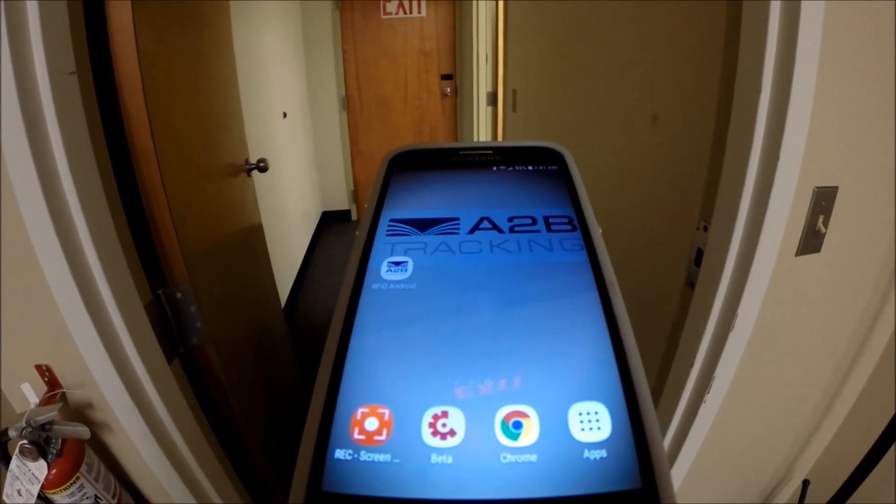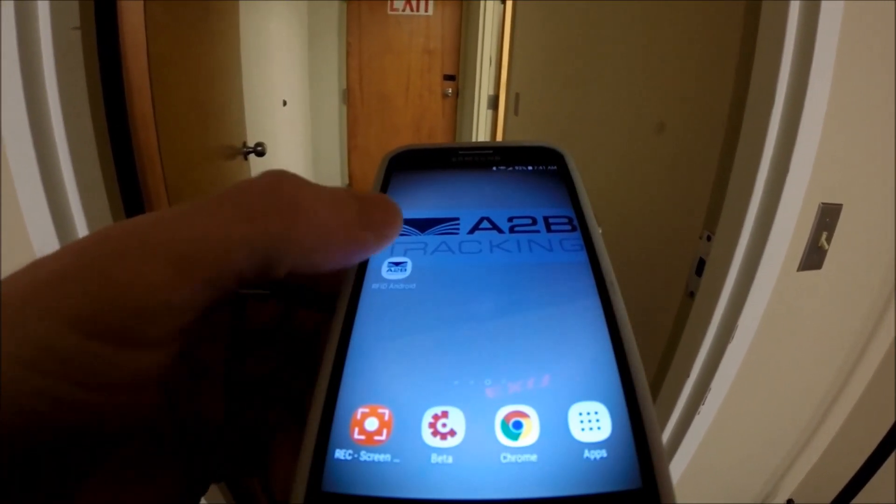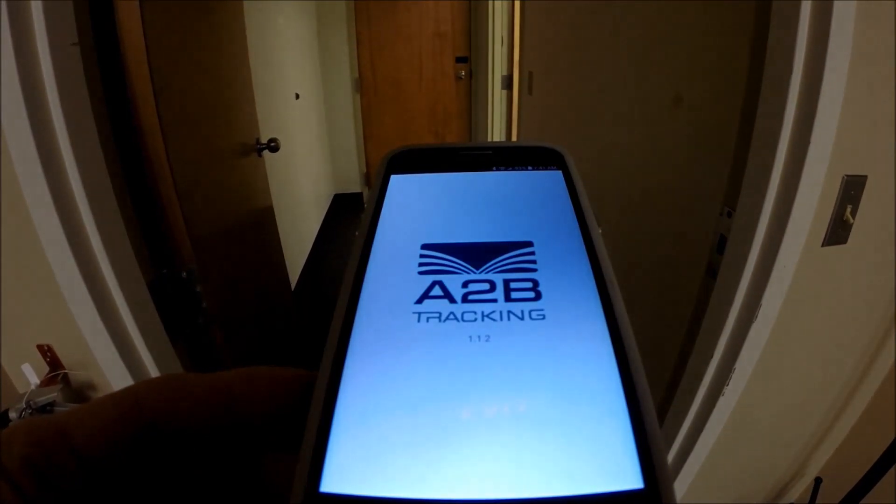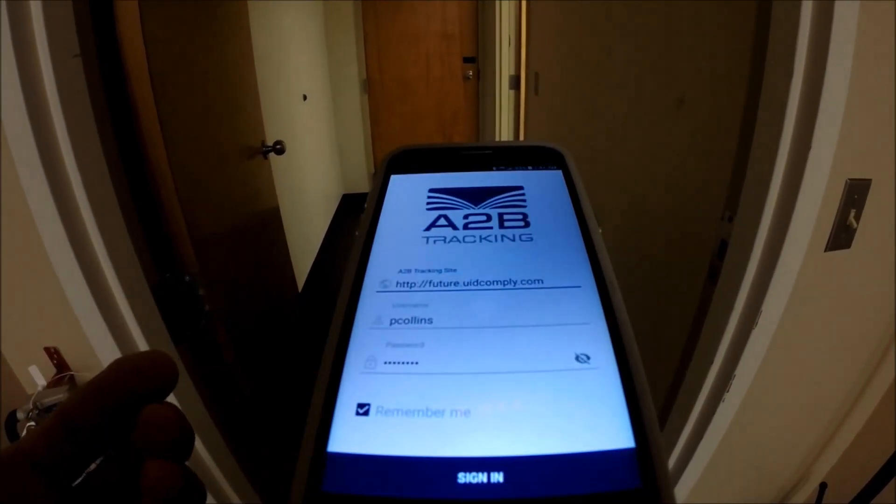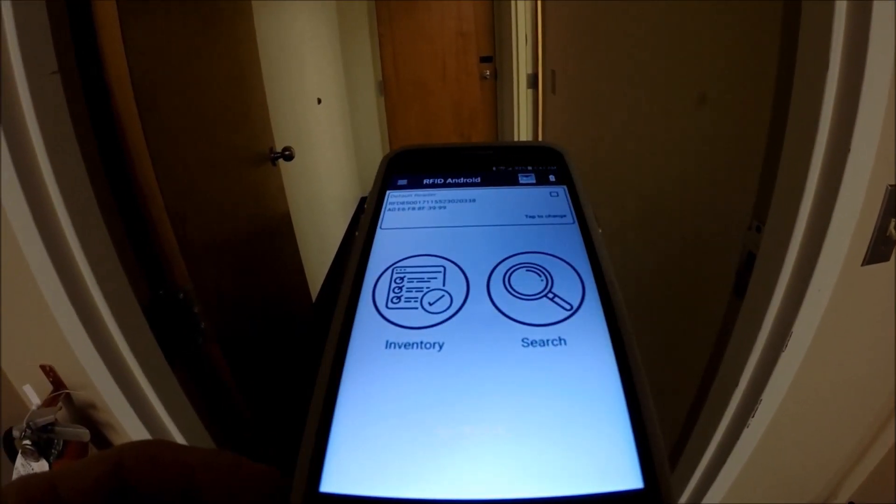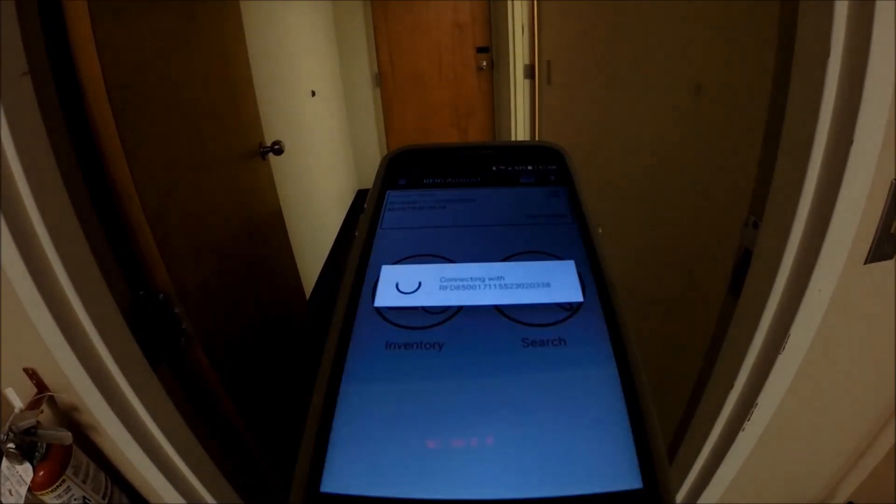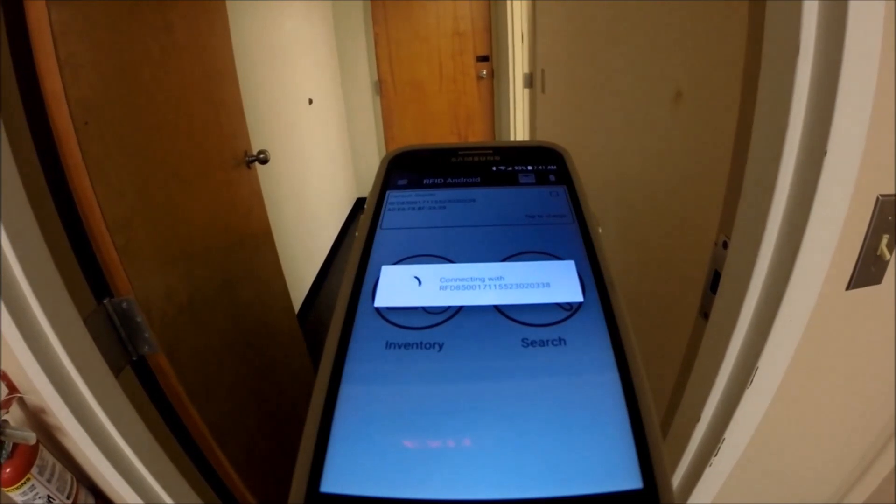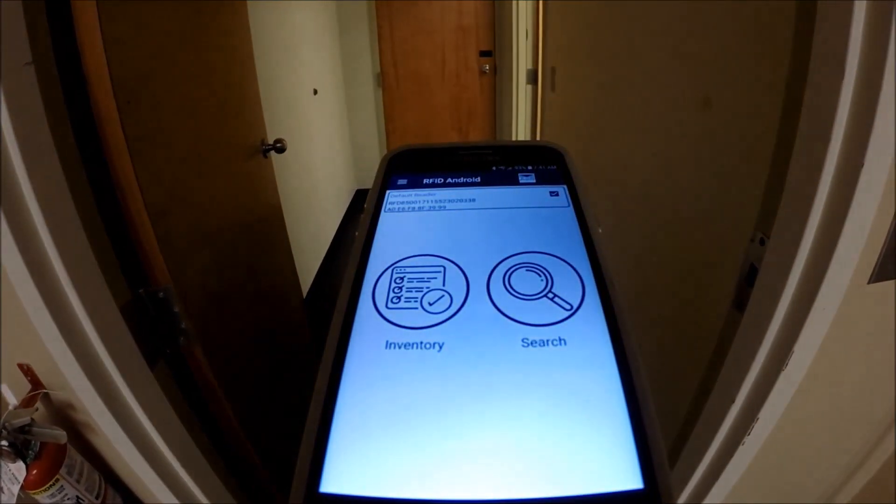At this point I have my Android device with my A to B tracking app downloaded. I can select the app. When I do I can see that it's going to prompt me for the login credentials so it'll sign me into my asset management database in the cloud and it'll allow me to select the RFD8500 that I have in my hand. It'll automatically establish that Bluetooth connection for me.